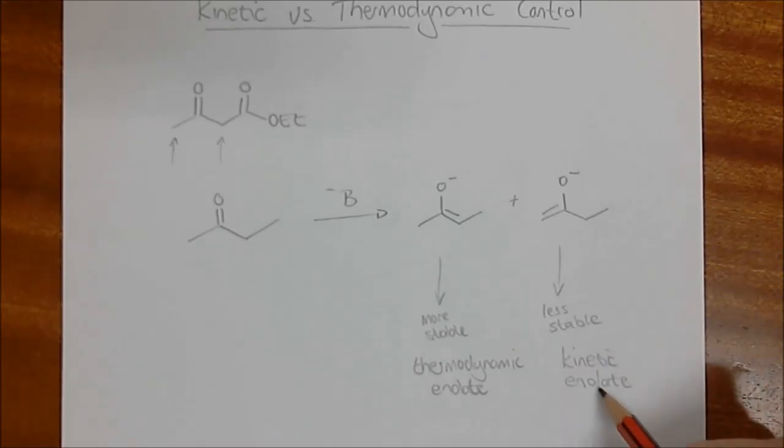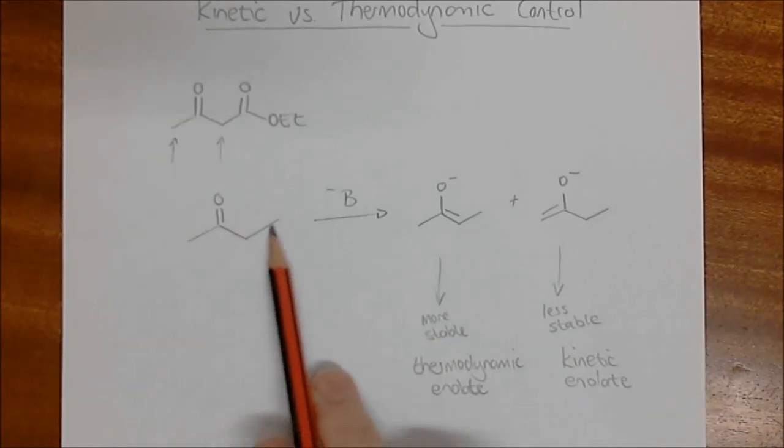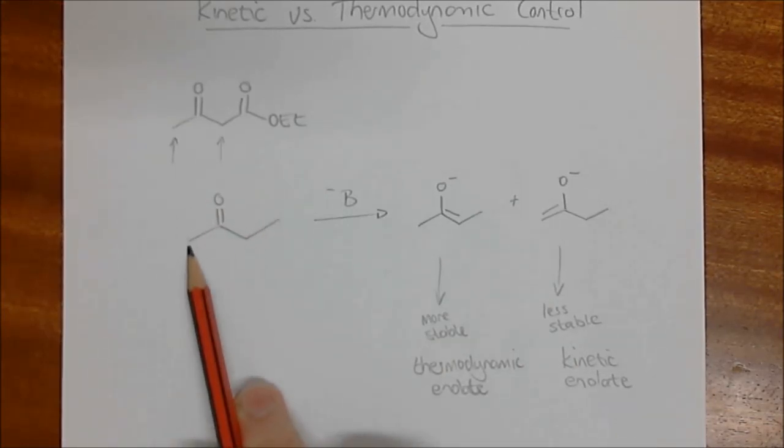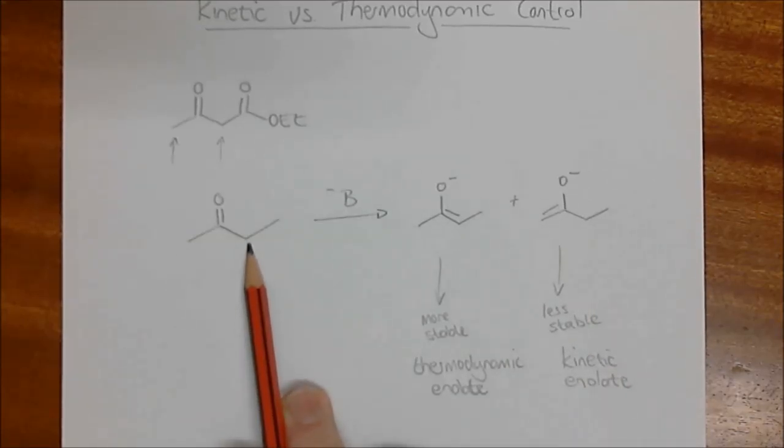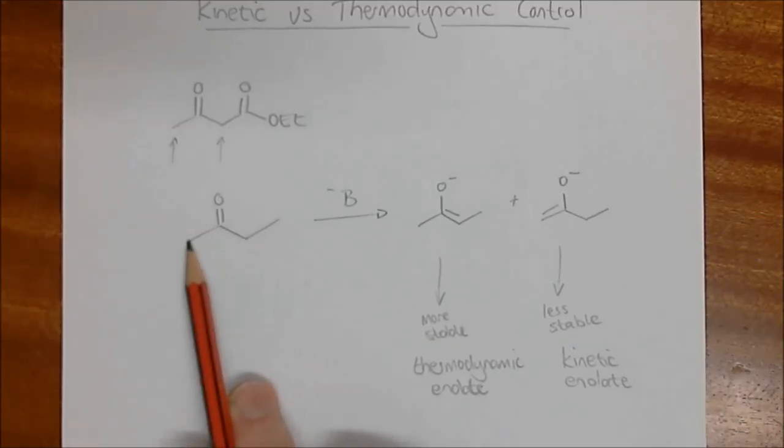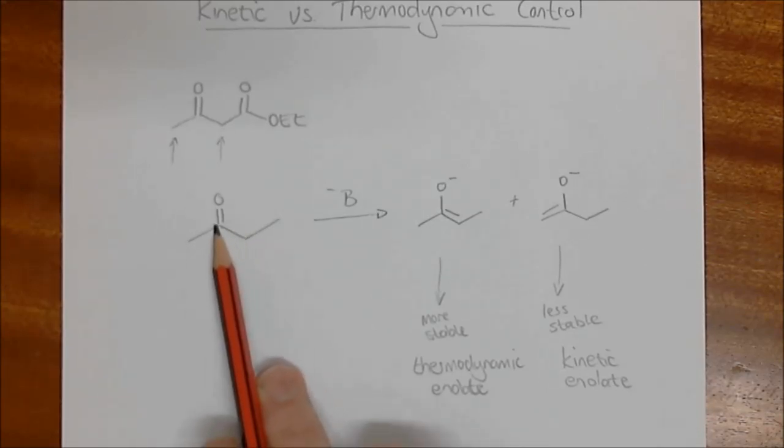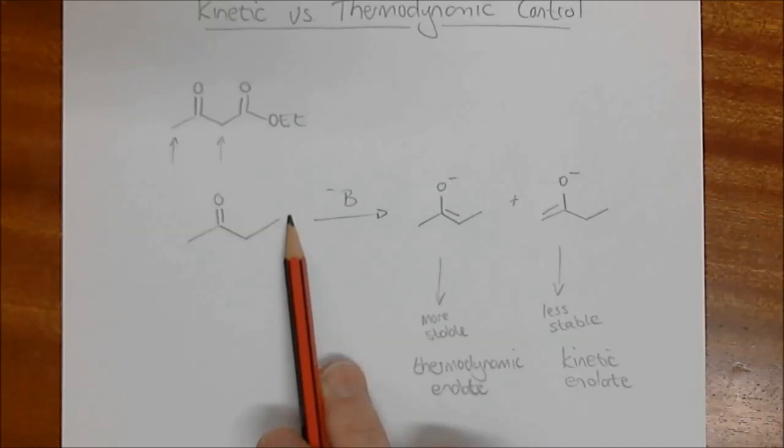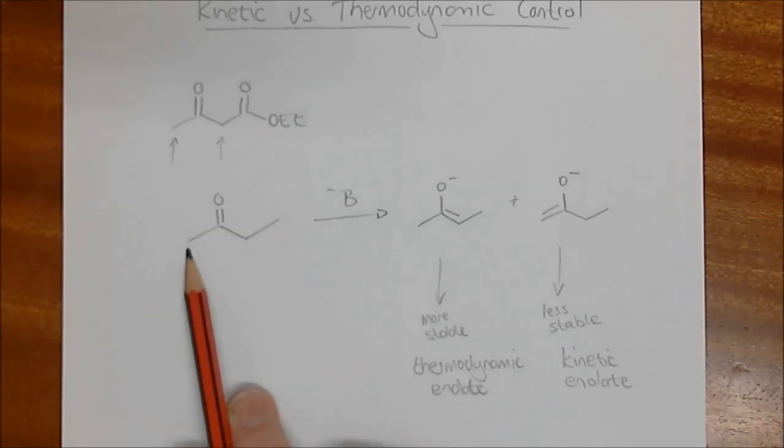Now, why would this one be formed faster? Well, we go back to our starting material over here and we just look at the possibilities. If we deprotonate here, we get the kinetic enolate. If we deprotonate here, we get the thermodynamic enolate. Over here we have three hydrogens, over here we've got two. So statistically speaking, we've actually got a greater chance of more hydrogen possibilities to choose from, and so deprotonating over here is likely to be faster. It's also likely to be faster because this carbon here with the three hydrogens on it is less sterically encumbered. There's only one bond to another carbon than over here that has two carbons on it. This is a secondary position and this is a primary position. So the primary position is less sterically encumbered, there are more protons there.